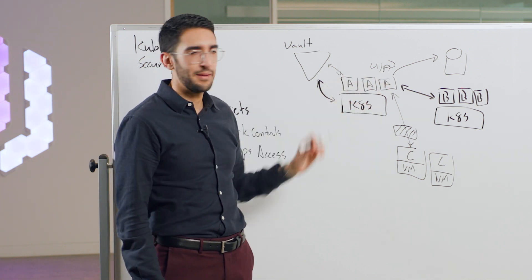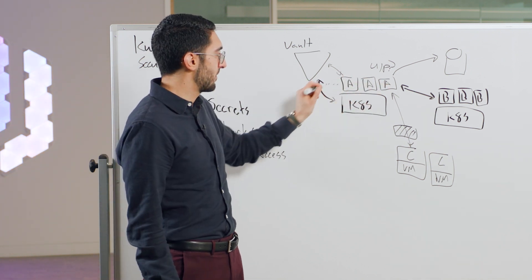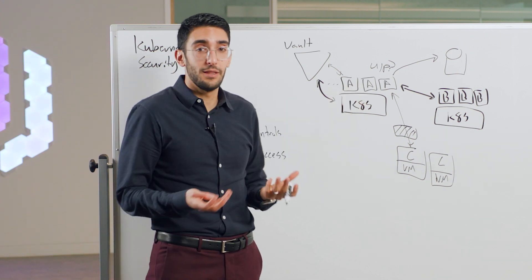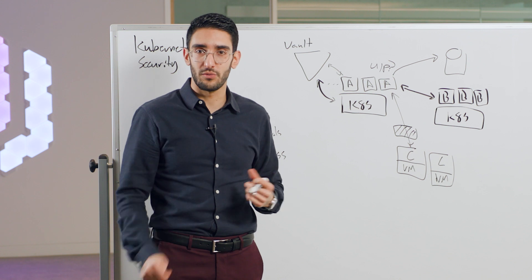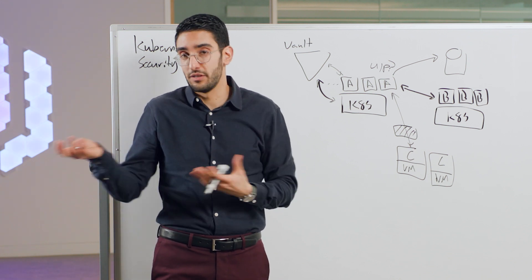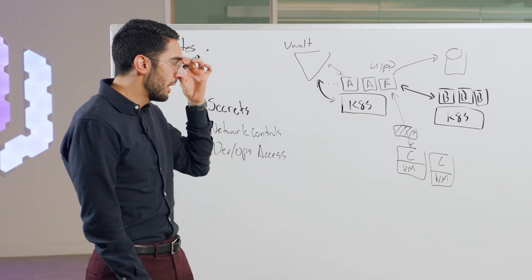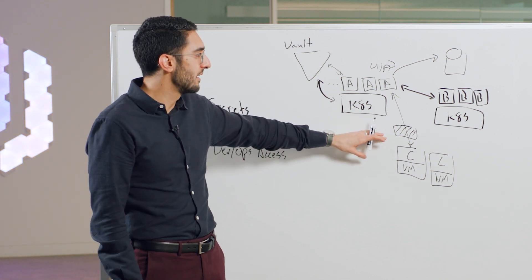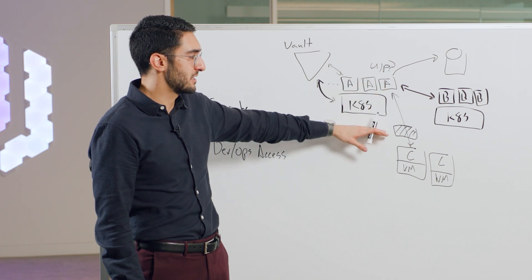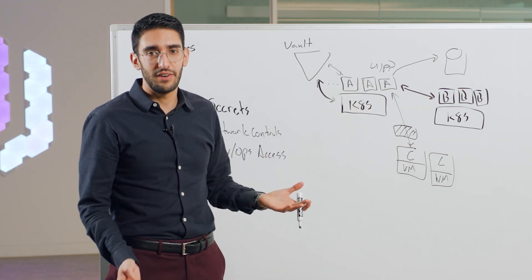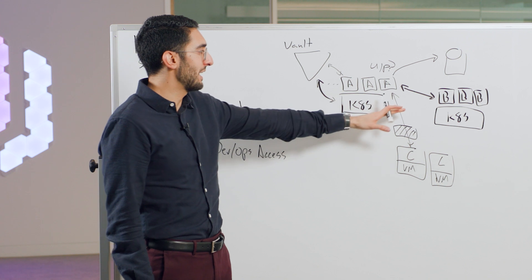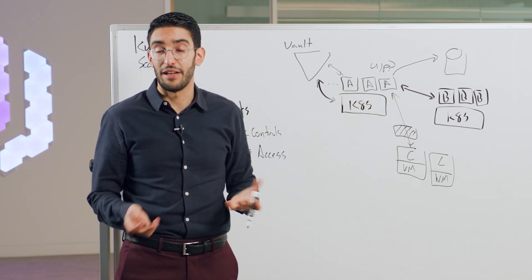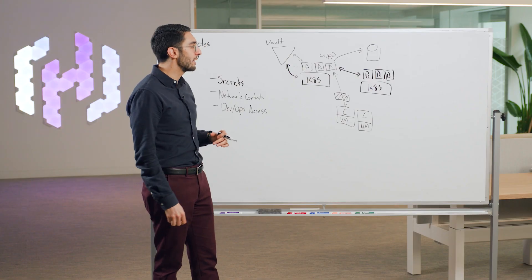In a Kubernetes environment, either you have to update the firewall every time a pod is deployed — which is very inconvenient — or you end up whitelisting the entire subnet, at which point the firewall isn't adding much value since you're letting all the traffic through anyway.